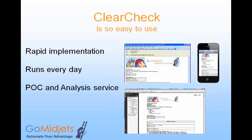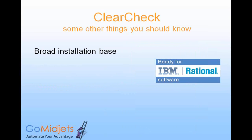We also offer two complementary professional services that help organizations that feel a need for expert advice. The first is a proof of concept, or POC, where we install ClearCheck on your specific system to demonstrate its optimal performance. The analysis service simply means that our professional partners examine the reports generated by ClearCheck and take all necessary actions to fix the problems that it finds. ClearCheck is a field-proven product, already installed and running in hundreds of organizations, and we have learned from addressing many, many problems, solutions, and complex configurations.